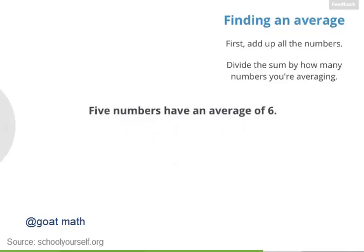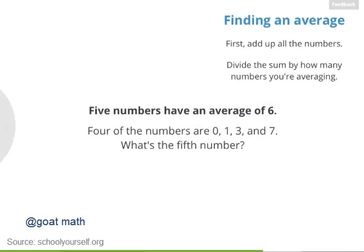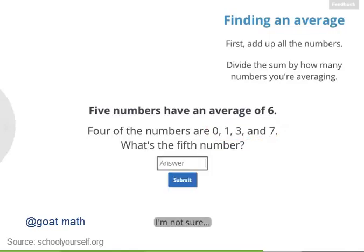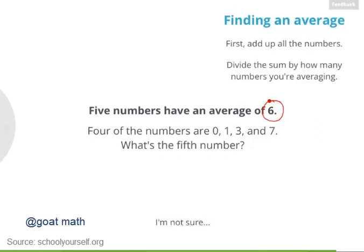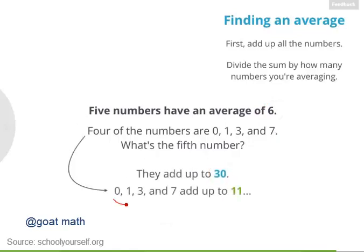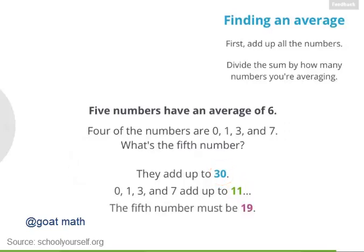Say I have five numbers and their average is 6. Four of the numbers are 0, 1, 3, and 7. Can you figure out what the final number must be? In order for five numbers to have an average of 6, they must add up to 30. The first four numbers — 0, 1, 3, and 7 — add up to 11. So if the first four numbers add up to 11 and all five add up to 30, that means the last number must be 19.